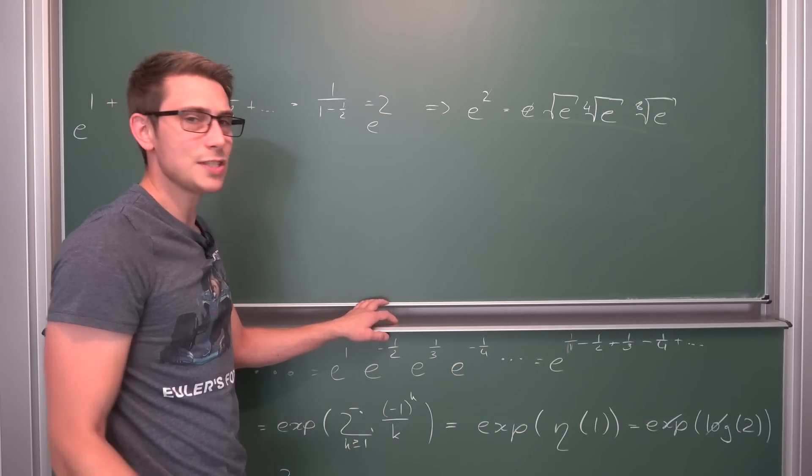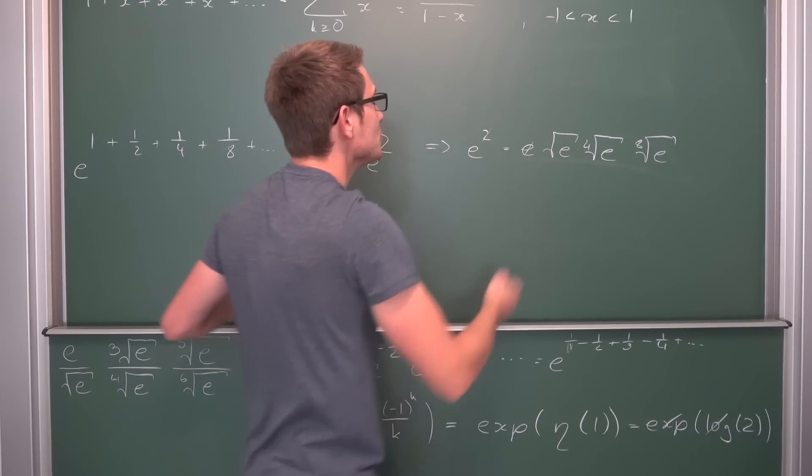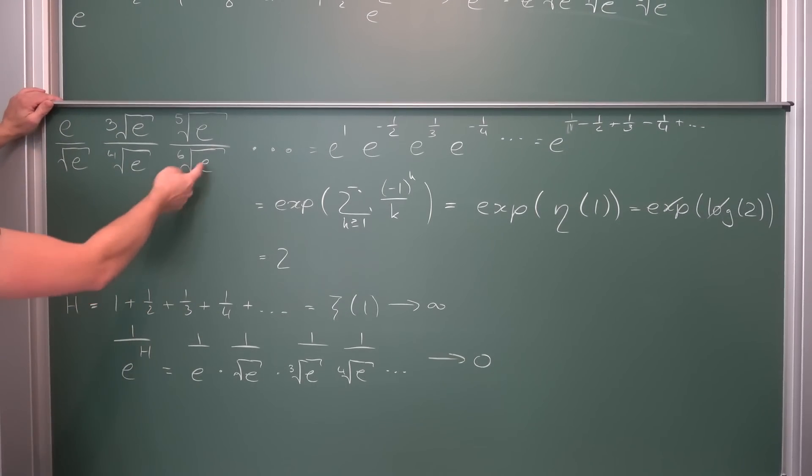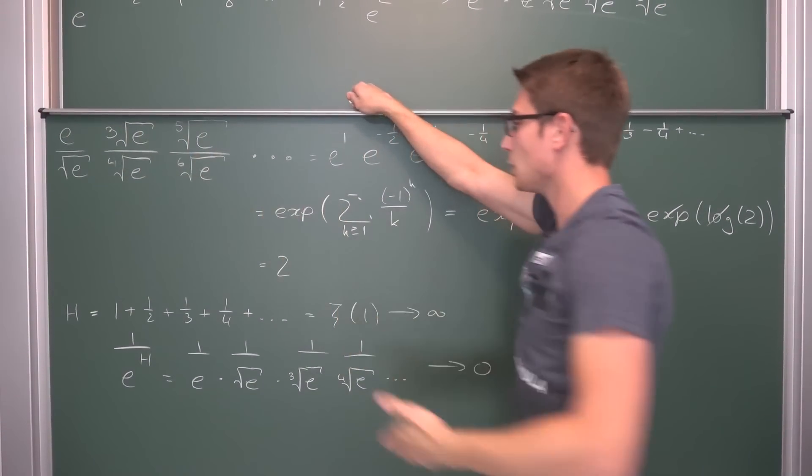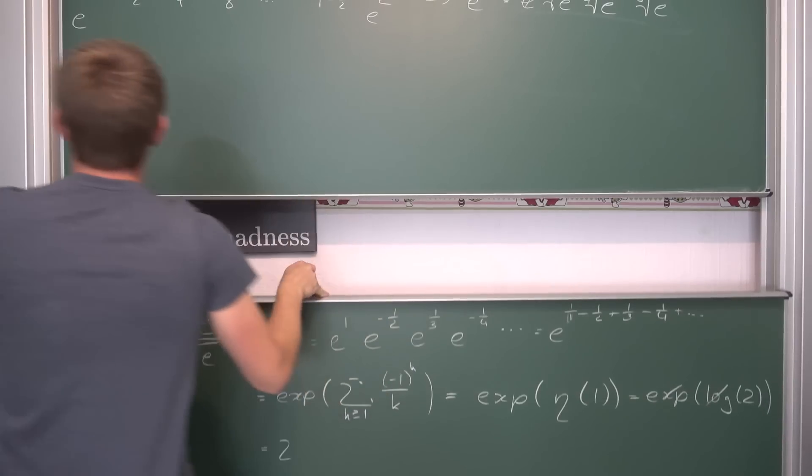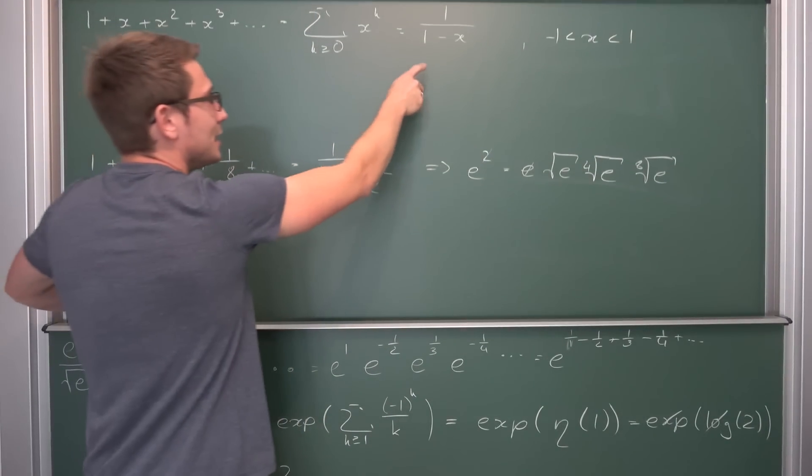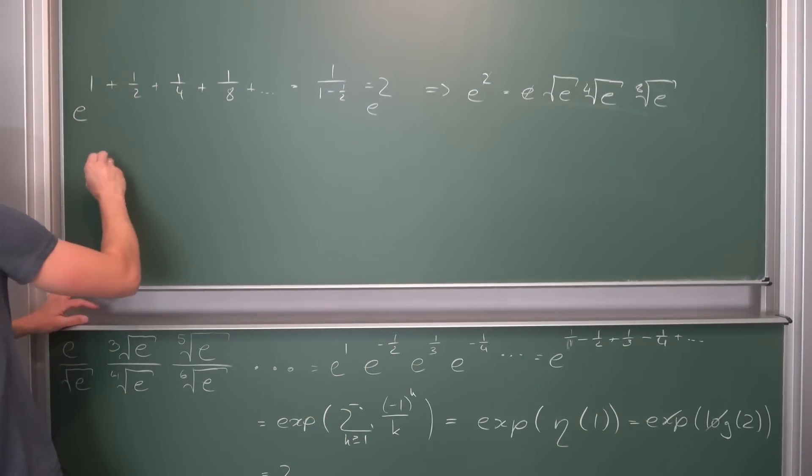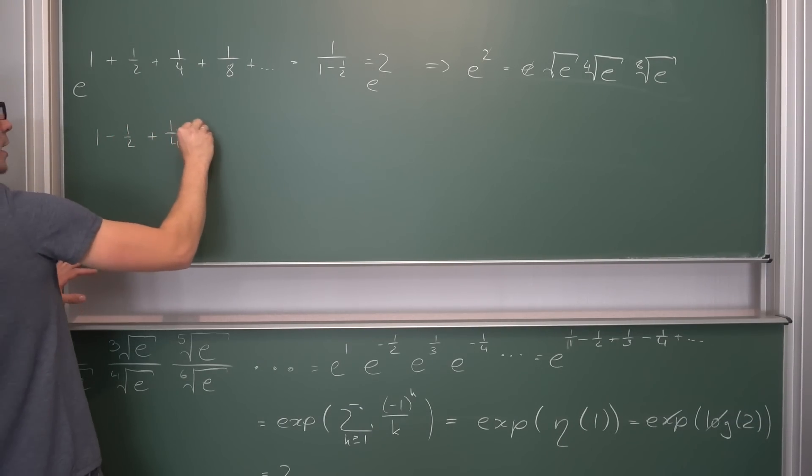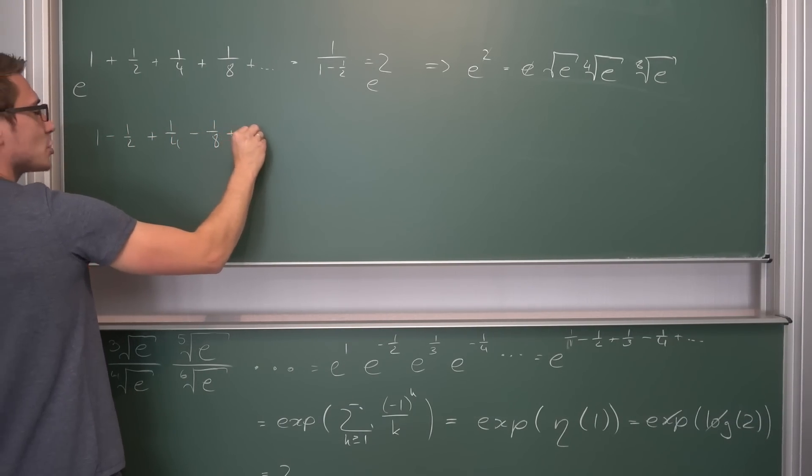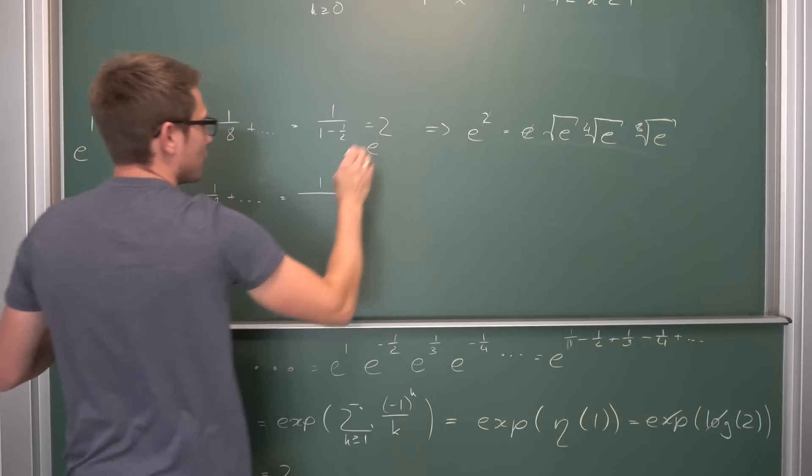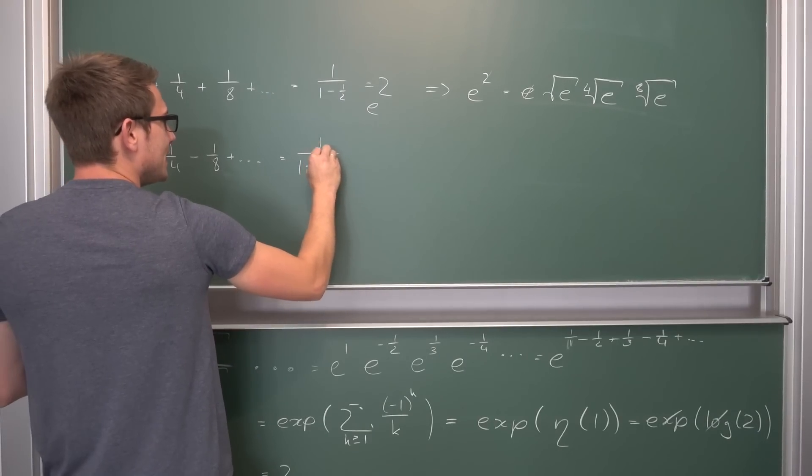One thing I found really cool is if we were to divide both sides by e, which is not equal to zero obviously, e is equal to two, which is the successor of one, we are going to get that e is also equal to all of those roots multiplied together of e, which is also a pretty cool fact.